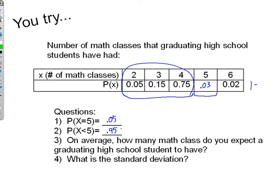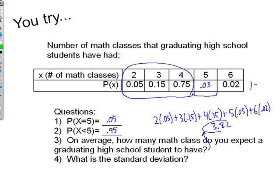On average, how many math classes do you expect a graduating high school student to have? We would go: 2 times 0.05, plus 3 times 0.15, plus 4 times 0.75, plus 5 times 0.03, plus 6 times 0.02. Bear with me for a second while I do that. Okay, I hope I didn't make a mistake, but that came out to 3.82, and so that's what you should have gotten for the expected value.